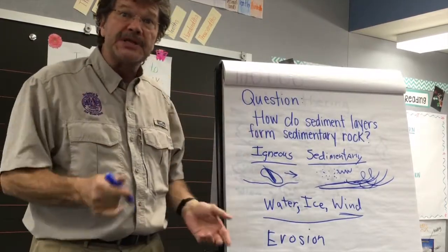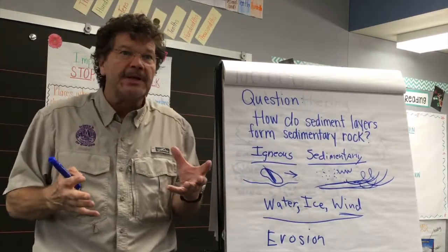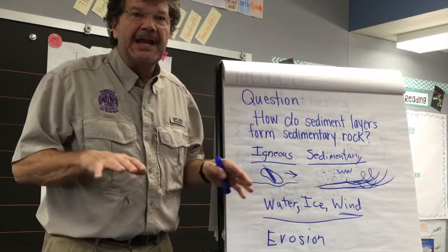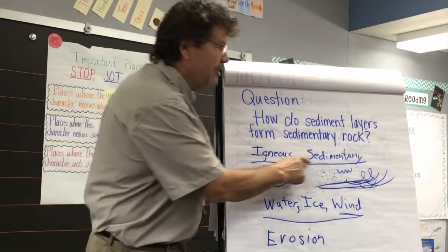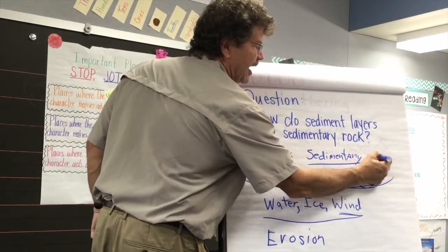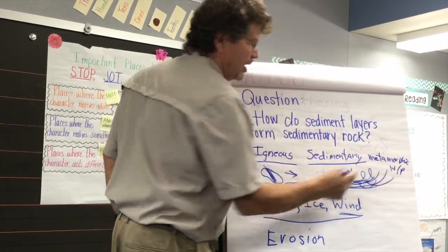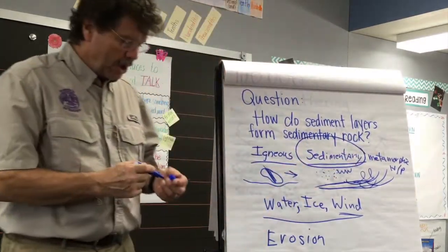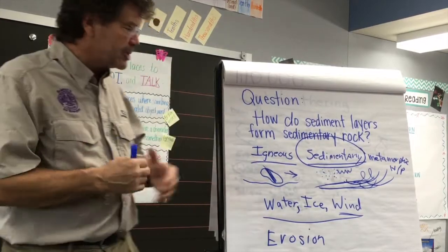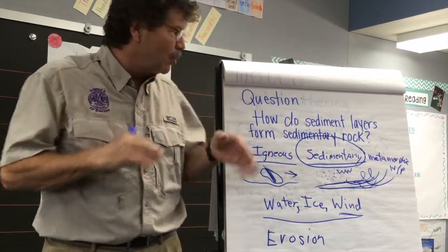Sediments are broken bits of rock. There are three types of rocks in the world: igneous, which means fire-formed — we call it magma when it's underground and lava when it's on top of the surface, and it cools into a rock. We have sedimentary rocks, which is what we're going to talk about today. And then there's metamorphic, which means changed rock, usually by heat and pressure. But the one we're going to focus on today are sedimentary rocks, because sedimentary rocks are made from sediments. You're going to study four sediments today, and we're going to try to make a model of a rock with layers.